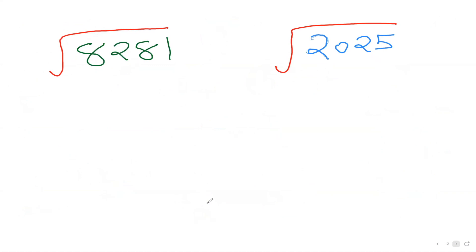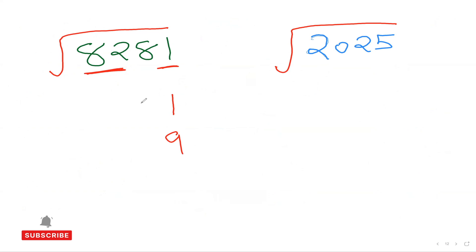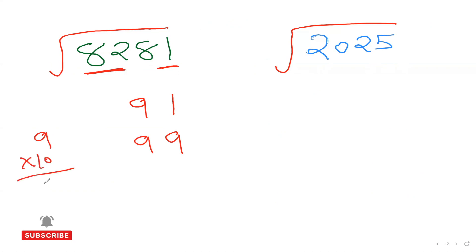Let's try 8281. Last digit is 1: 1² = 1, so last digit is 1, or 10 − 1 = 9. Remove last two digits, leaving 82. 9² = 81, 10² is too big, so use 9. Possible answers: 91 or 99. Multiply 9 × 10 = 90. Our leftover 82 is smaller than 90, so choose the smaller answer: 91.